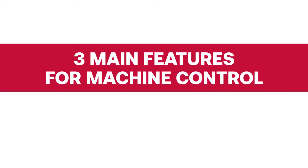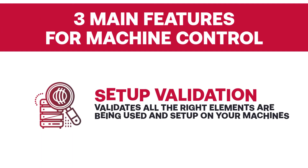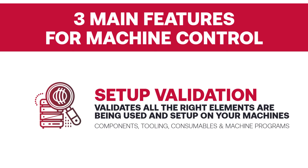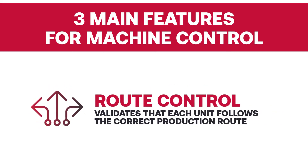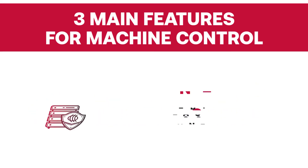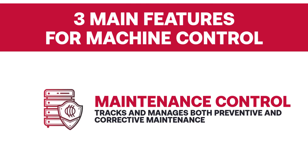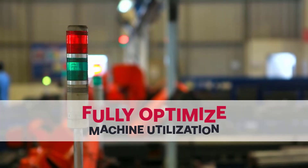The three main features of machine control are: setup validation to validate that all the right elements are being used and set up on your machines, including components, tooling, consumables, and machine programs — this can be used for both offline and online setup; route control to validate that each product follows the correct production route — if an error is found, an alarm will sound and the line can be physically stopped; and maintenance control to track and manage both preventive and corrective maintenance to fully optimize machine utilization.